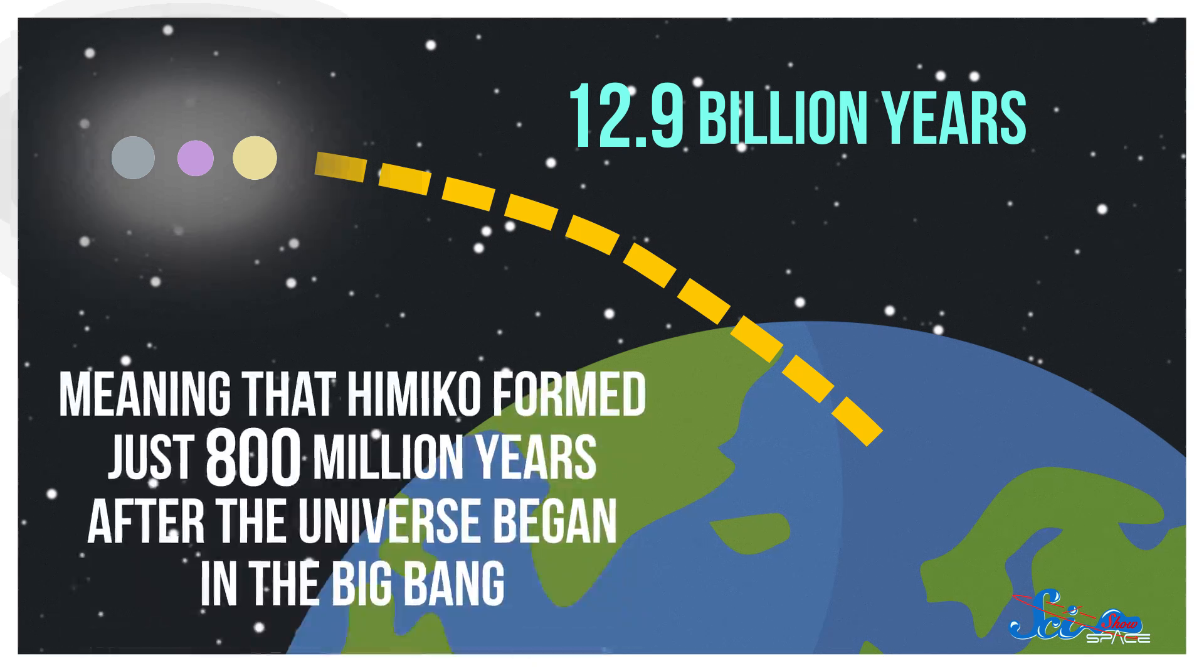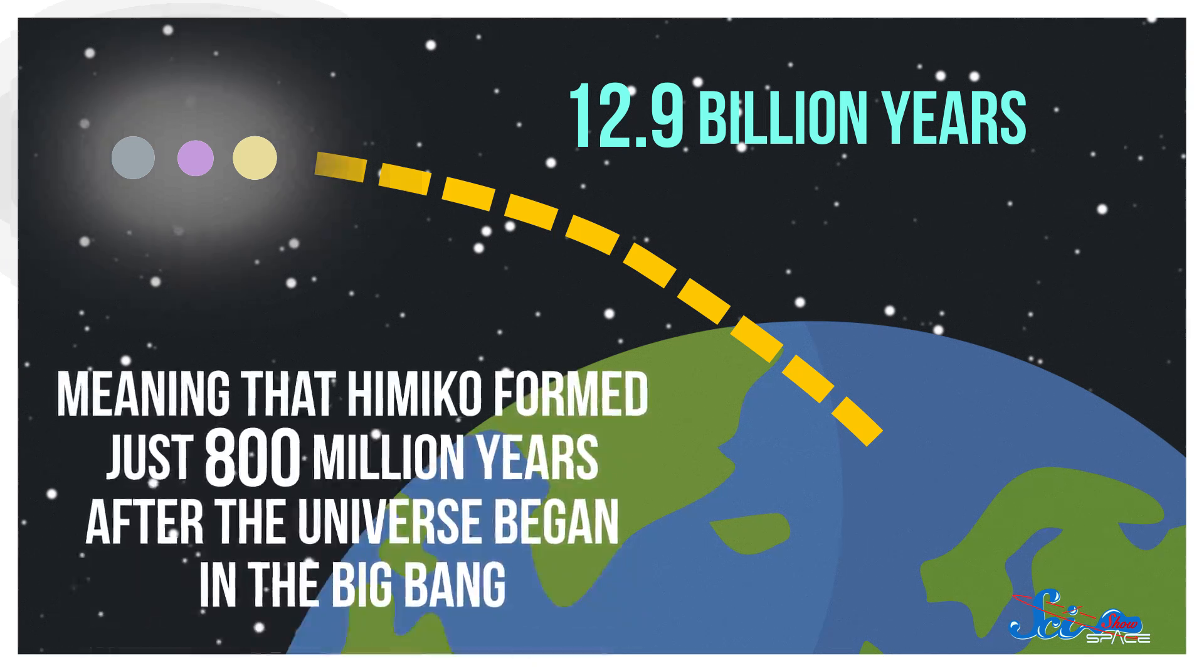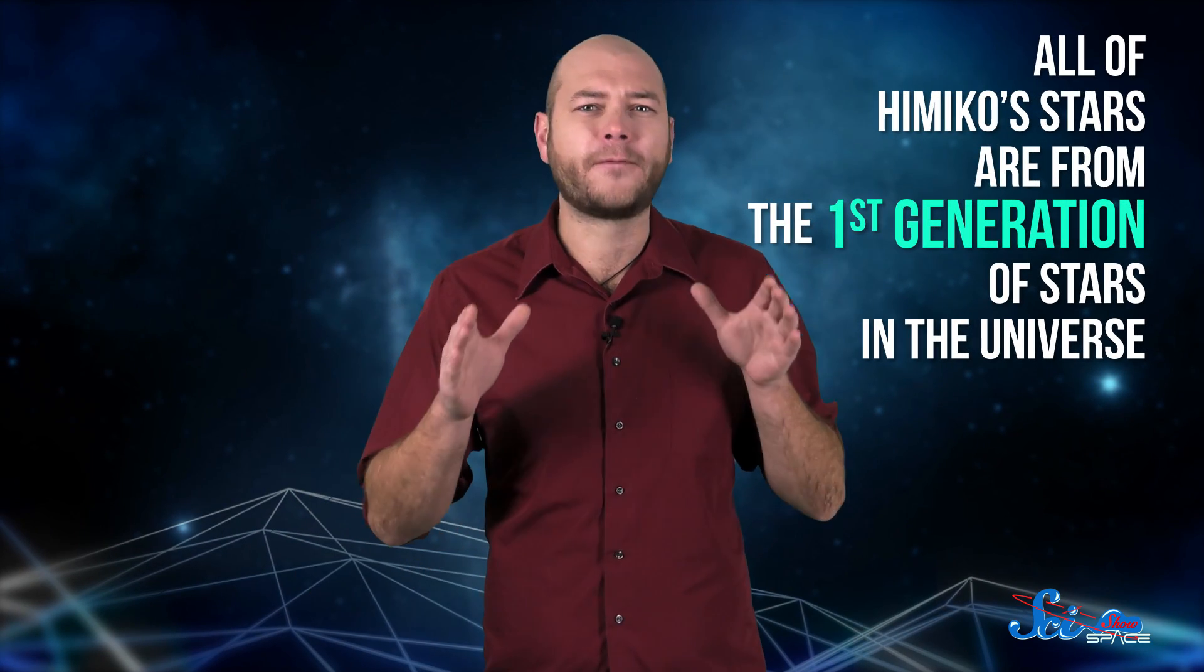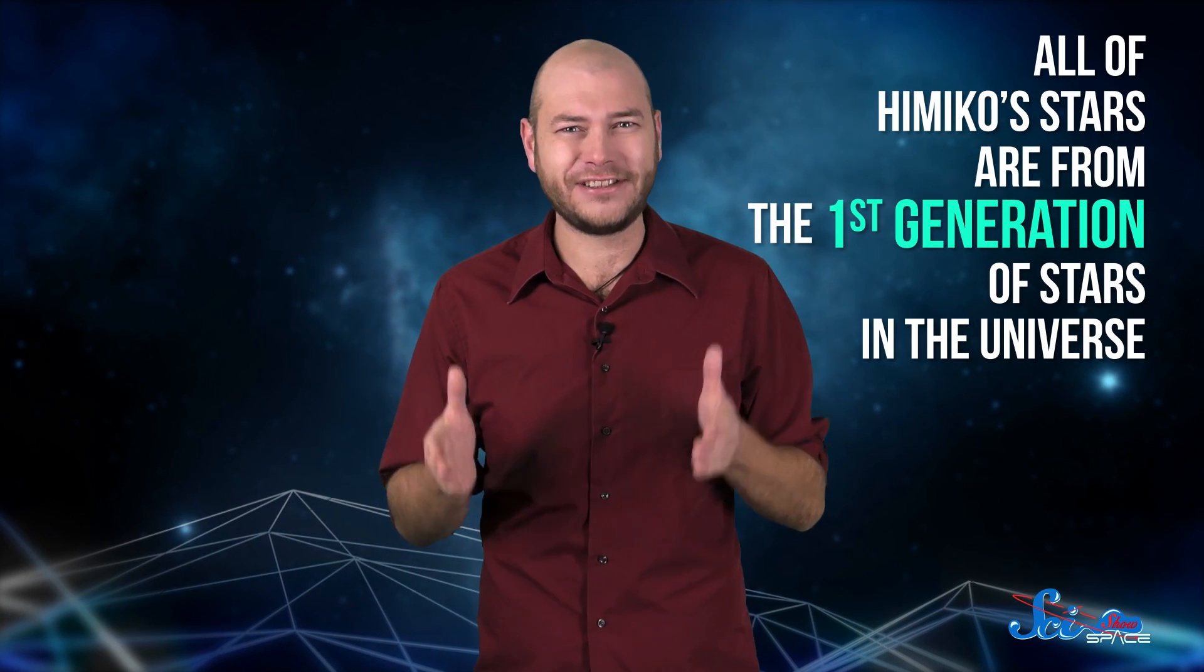Meaning that Himiko formed just 800 million years after the universe began in the Big Bang. Himiko is so old that it has almost no heavy elements, like carbon, which form as stars die. So all of Himiko's stars are from the first generation of stars in the universe.